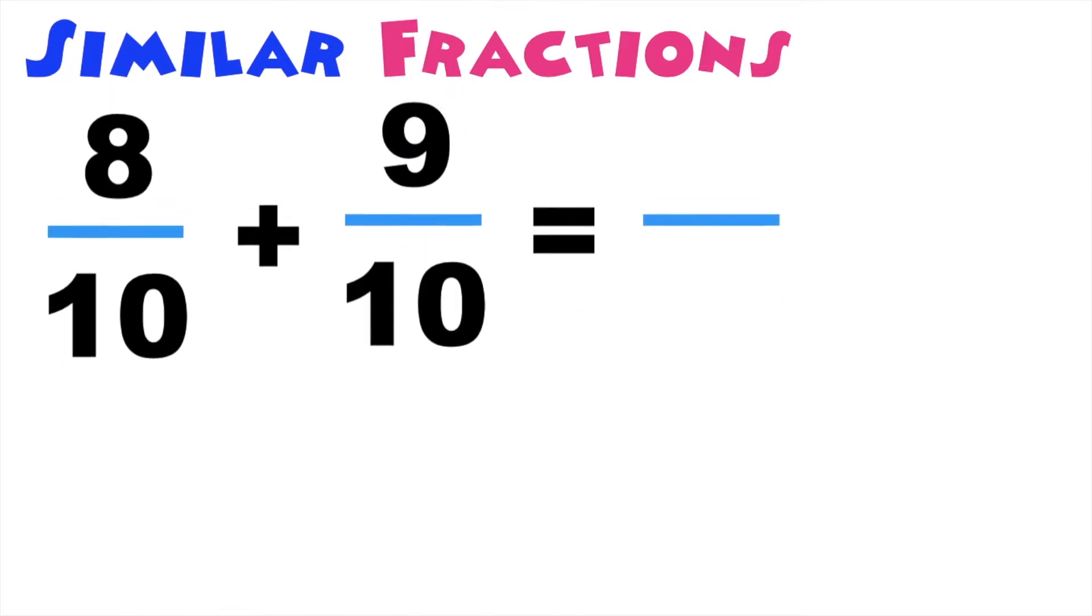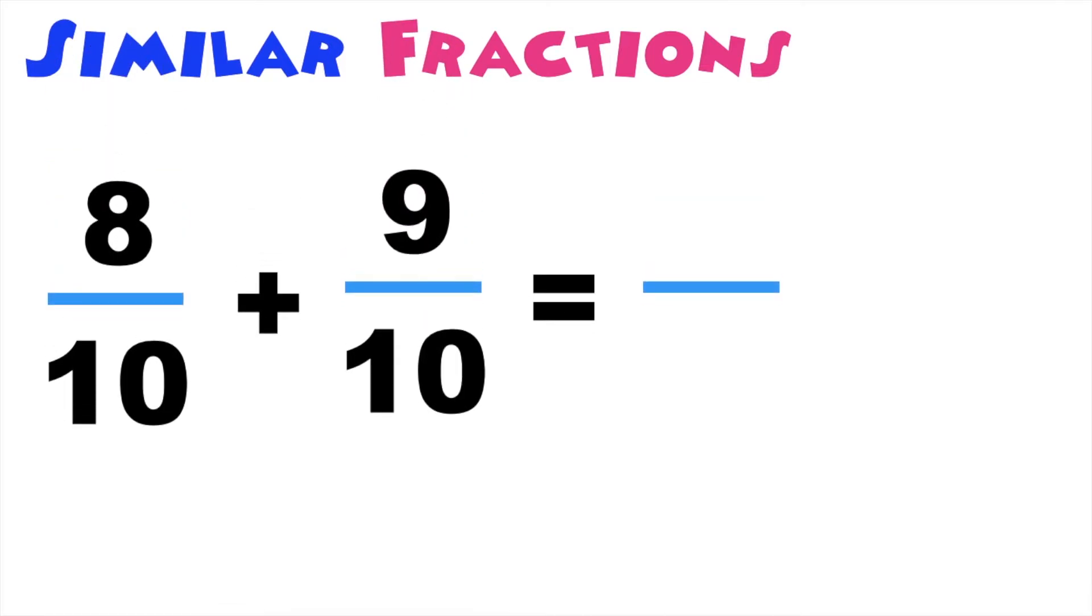When you say similar fractions, their denominators are the same. So we have 8 over 10 plus 9 over 10 is equal to blank. Since their denominators are the same, we can simply copy 10.